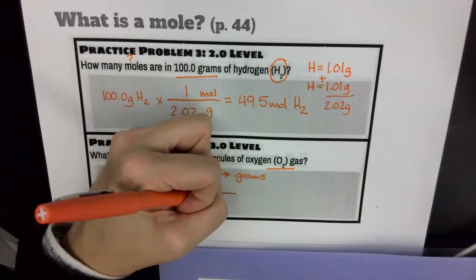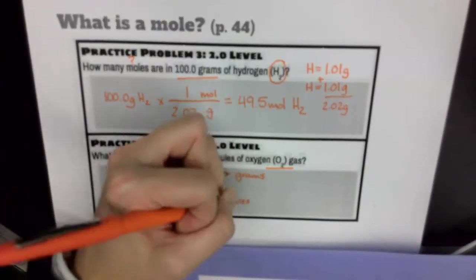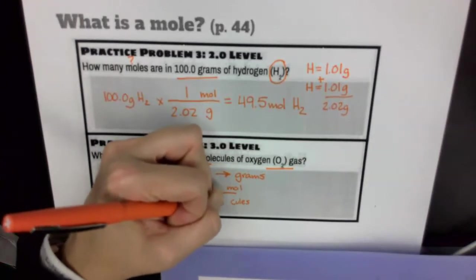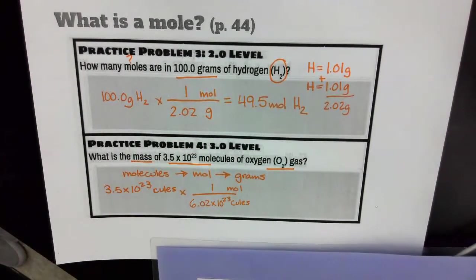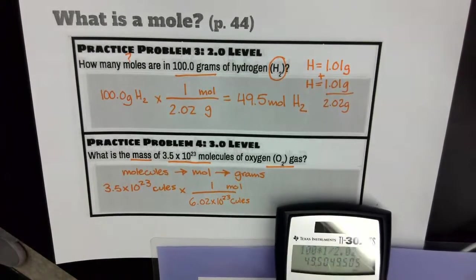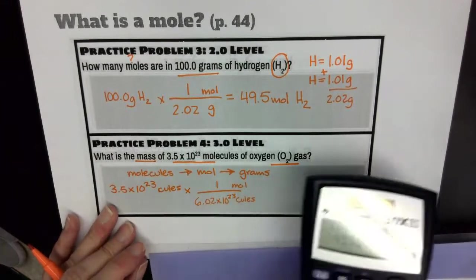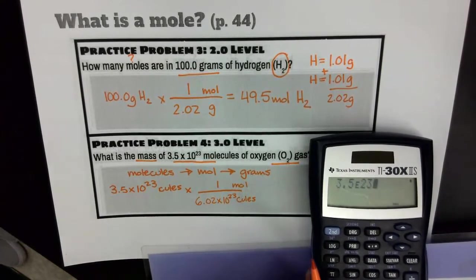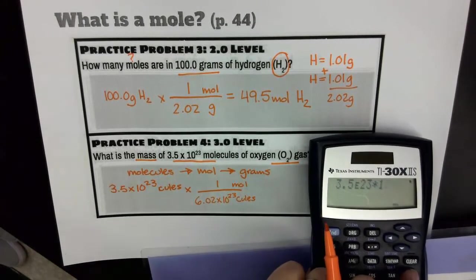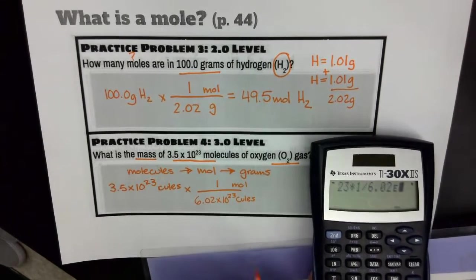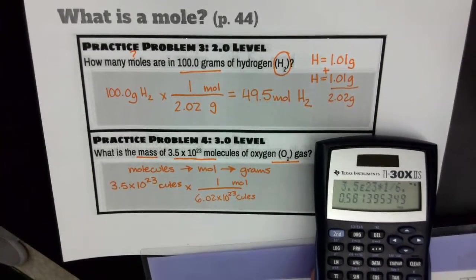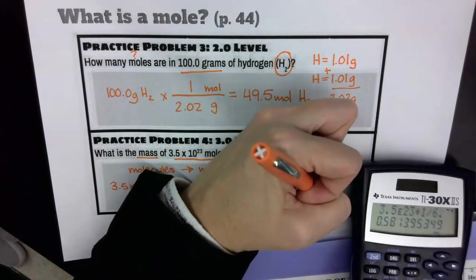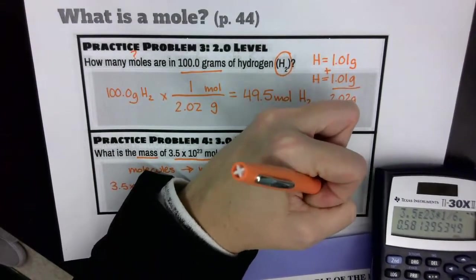I'm going to do times in a line. I want molecules to go away, so I put 'cules on the bottom, and I want to get to moles, so moles go on top. One mole equals 6.02 times 10 to the 23rd molecules. Typing 3.5 2nd E 23 times 1 divided by 6.02 2nd E 23 and hitting enter, I get 0.5813953 — and that's going to be moles.